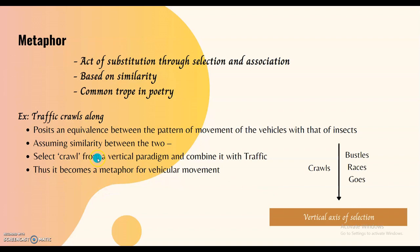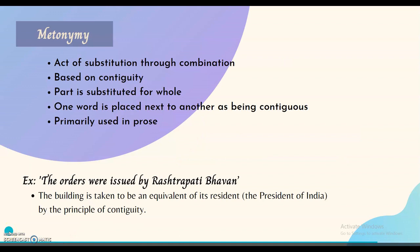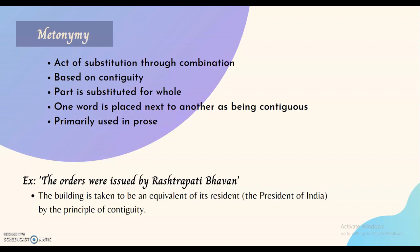Now let's take a look at metonymy. This is where we substitute a term with another through the principle of combination, based on contiguity — where a word is placed next to another because of its association, and the part is substituted for the whole. This is primarily used in prose. For example, in the statement 'the orders were issued by Rashtrapati Bhavan,' the building does not issue orders — it is in fact the President of India, who resides there, who issues them. The building is taken as an equivalent of its resident by the principle of contiguity.